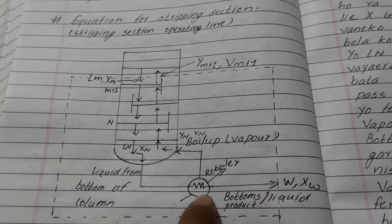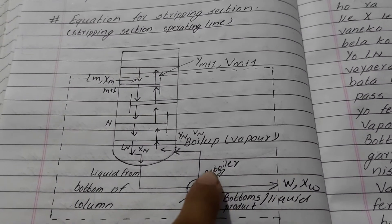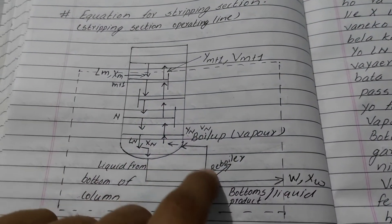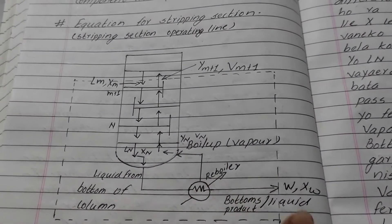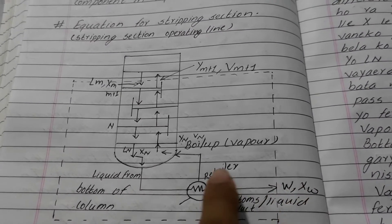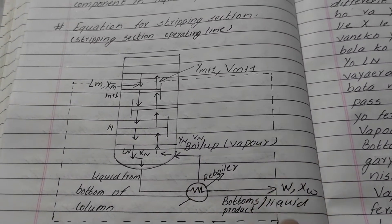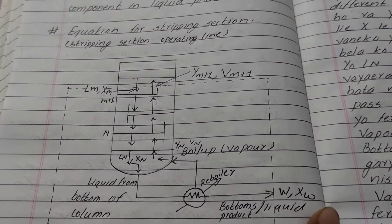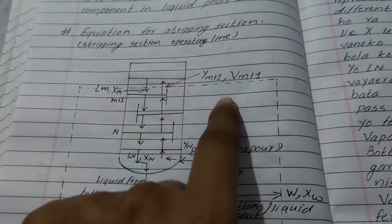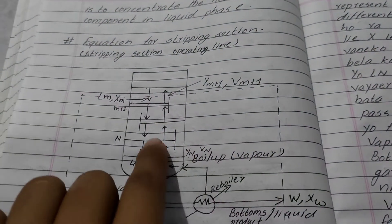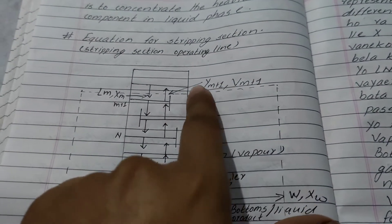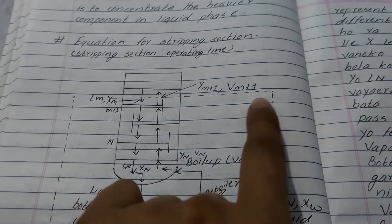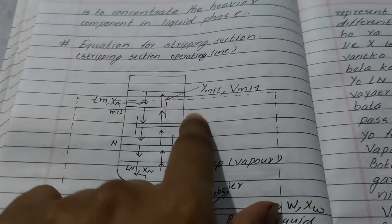That is the bottom liquid, and we will use the distillation column. We can convert this liquid from the reboiler — from the bottom liquid. Since this liquid is in vapor form, the liquid vapor comes from the bottom liquid. BM plus 1 is the same as vapor form, so we have the concentration y(n+1), which is the concentration of vapor.